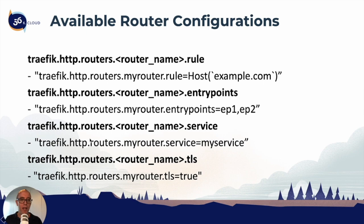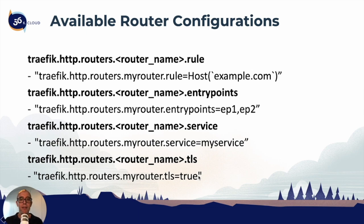To configure the service, you use traefik HTTP routers, define the name, then configure the service option with equals my-service. And finally, TLS — do we want to enable TLS on the router, true or false? By default it's false, meaning it doesn't restrict connections to TLS. If you make it true, it only accepts TLS connections. That's what we'll cover in the next section.